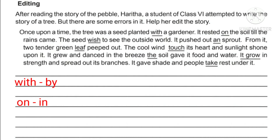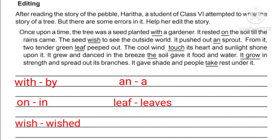Errors to correct: 'wish' — the past tense is 'wished.' 'Pushed out and sprout' — 'sprout' should be 'sprouted' because a vowel sound follows, so we write 'a sprout.' 'Touch' should be 'touched' — past tense. From it, two tender green leaves peeped out — that is correct.